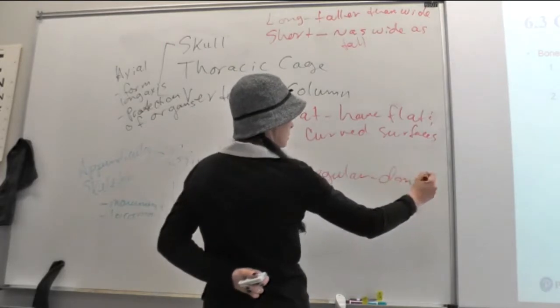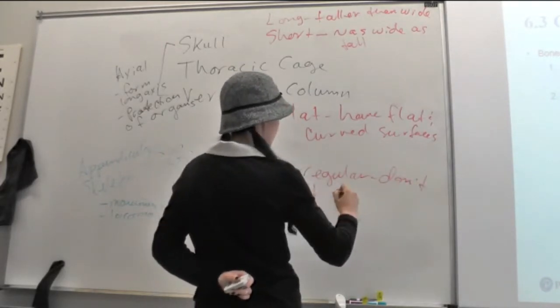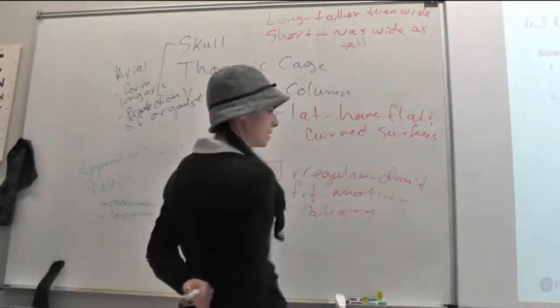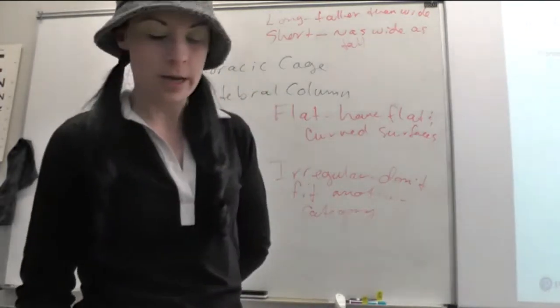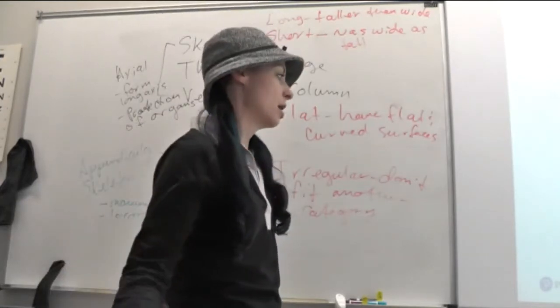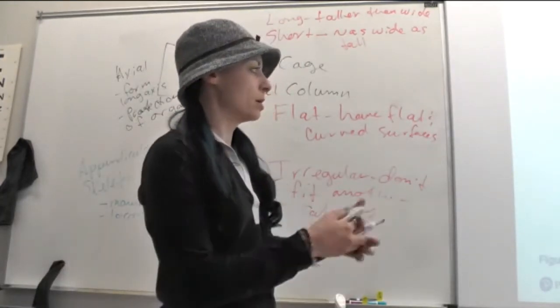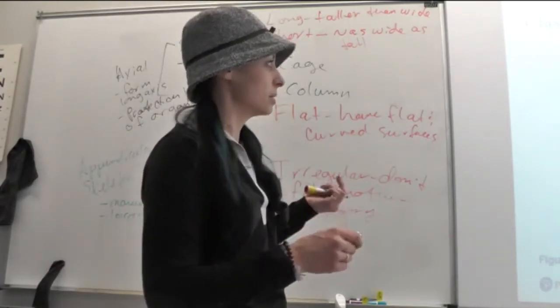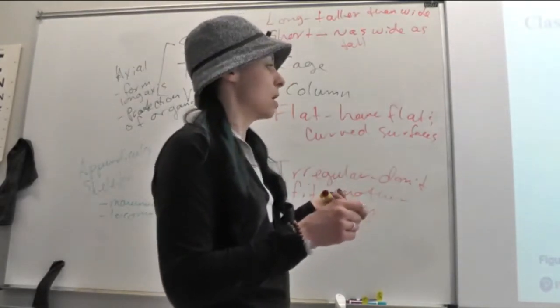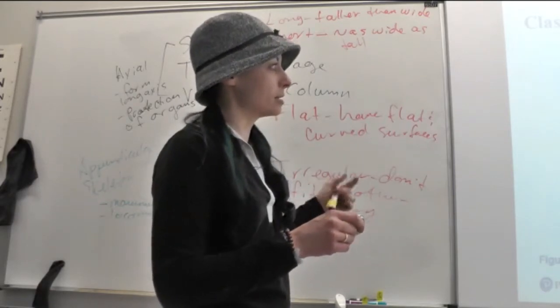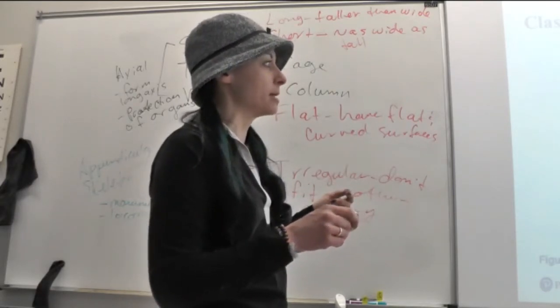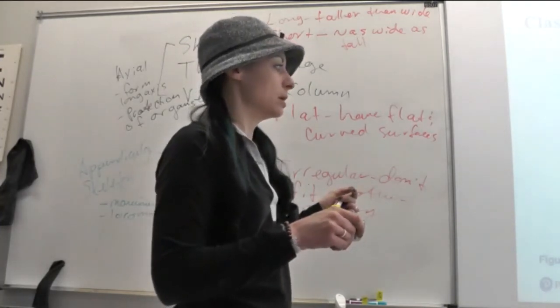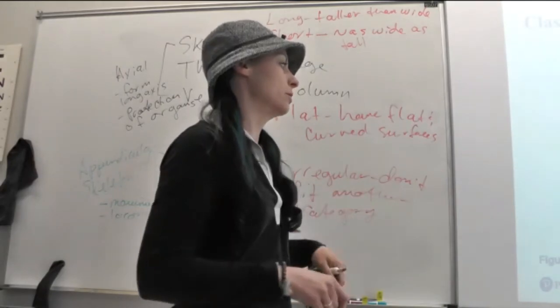And then irregular bones don't fit well into any other categories. They're irregular. So, a great example of an irregular bone is a vertebra. So, this is showing some examples. Long bones we've met. I think we've met all. Yeah, all of our long bones. So, longer than they are wide. Flat bone. Here's another flat bone that's just showing you. Your sternum that's actually curved slightly on the back. And then short bone, talus, irregular bone, vertebra.